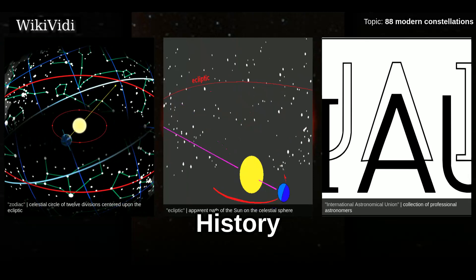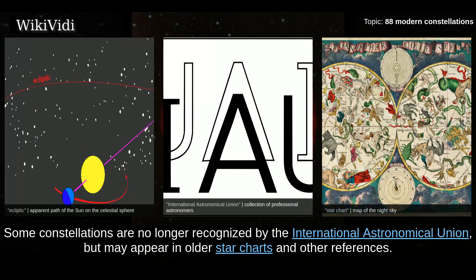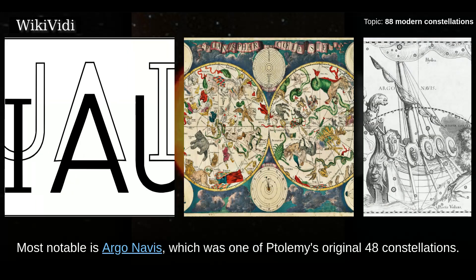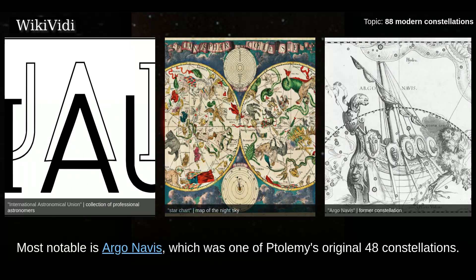Some constellations are no longer recognized by the International Astronomical Union, but may appear in older star charts and other references. Most notable is Argo Navis, which was one of Ptolemy's original 48 constellations.